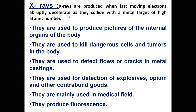X-rays are produced when fast-moving electrons abruptly decelerate as they collide with a metal target of high atomic number. They are used to produce pictures of internal organs of a body. They are used to kill dangerous cells. They are used to detect flaws and cracks. They are used for detection of explosives. They are mainly used in the medical field and reduce fluorescence.